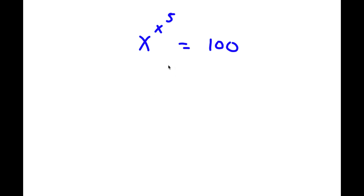So in this problem, I have x to the power of x to the power of 5 is equal to 100.